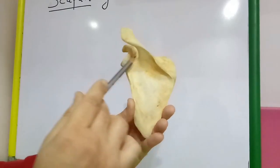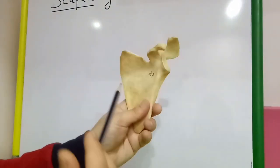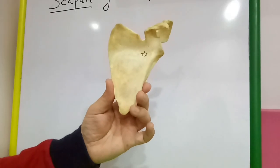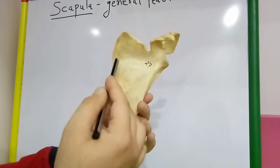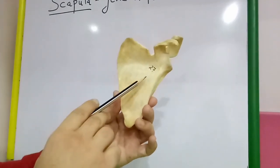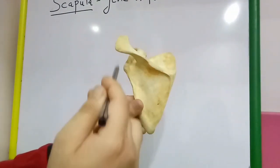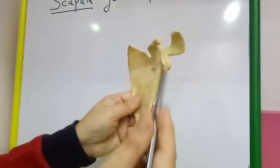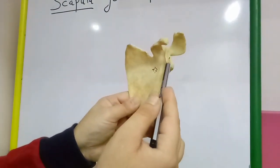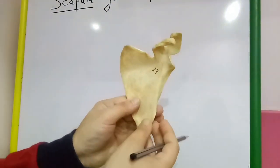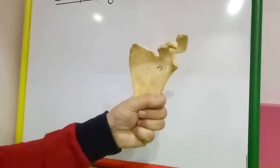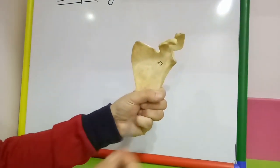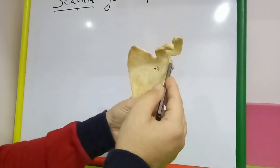So there are two notches: one is the spinoglenoid notch, and the other notch along the superior border is the suprascapular notch. To determine the side of the scapula, the costal surface is concave and should be directed forwards and medially, whereas the dorsal surface has the attachment of the spine. Keep the spine on the posterior side such that the glenoid cavity is facing laterally, forwards, and slightly upwards. This is the left side scapula held in anatomical position.